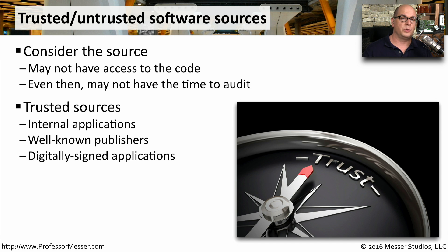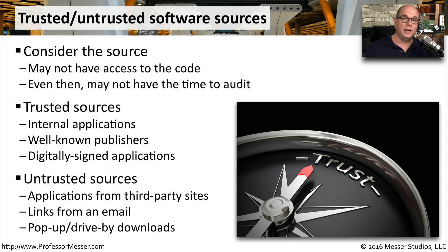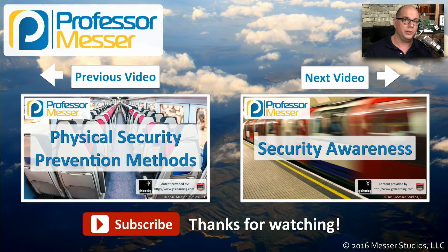A common trusted source might be an application you're developing in-house, or maybe it's coming from a well-known publisher — if you're installing an application from Microsoft, it's generally one you can trust. Or it might be an application that has been digitally signed by a source you can also trust. An example of an untrusted source might be a third-party site you've never worked with before that you're downloading software from, links you're following in an email, or a very common untrusted source — a pop-up or drive-by download that tries to install software onto your computer.